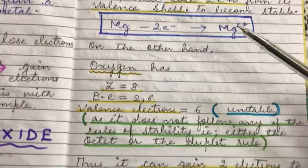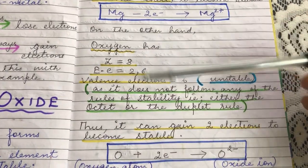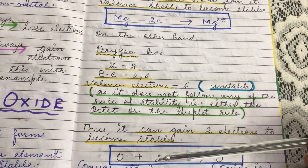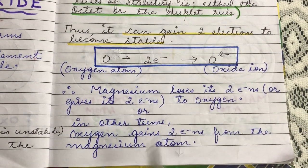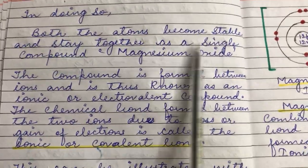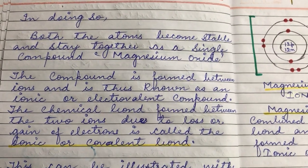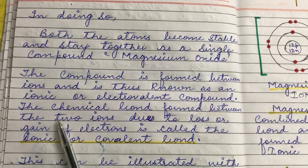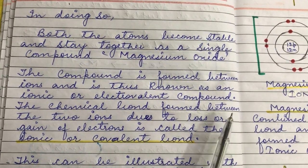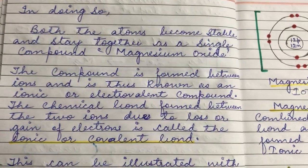Magnesium wants to lose two electrons and oxygen wants to gain two electrons. So magnesium gives its two electrons to oxygen, and oxygen takes two electrons from magnesium — in turn they both form a bond. In doing so, both atoms become stable: magnesium by losing and oxygen by gaining. They stay together forming the compound magnesium oxide. The compound formed between ions is known as an ionic or electrovalent compound, since ions are involved in this bond formation.